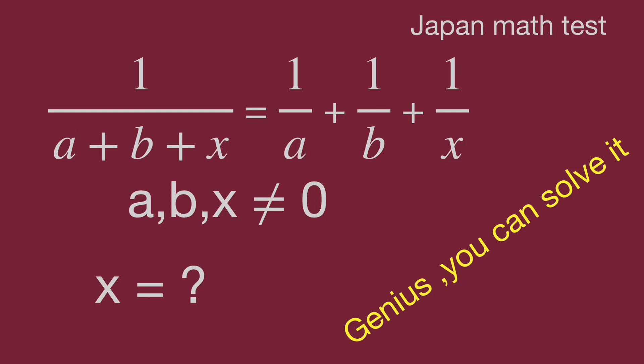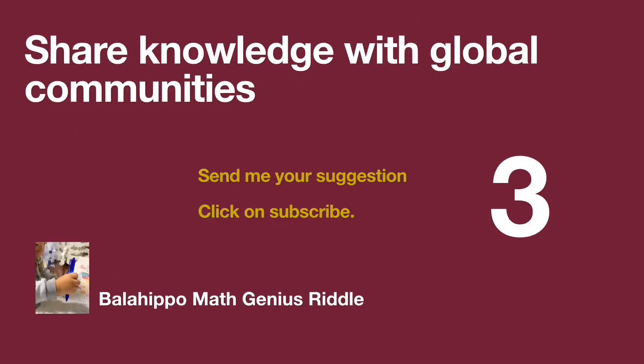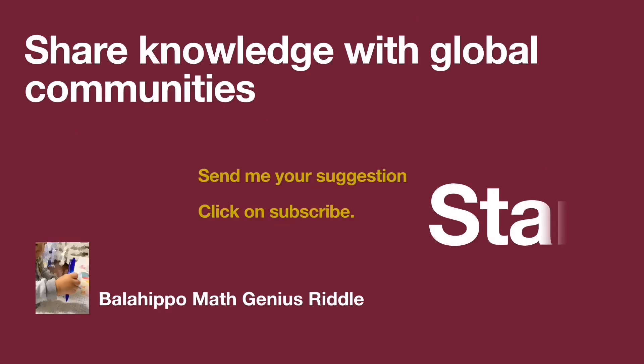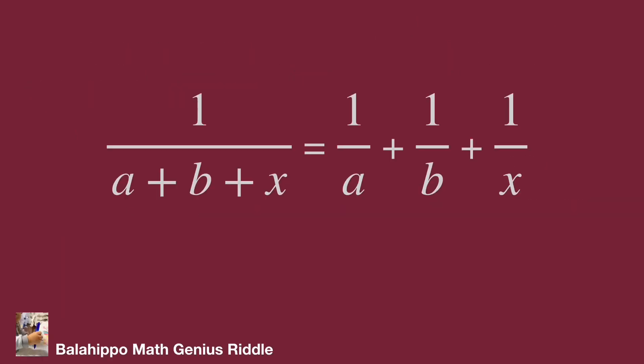Pause the video and try it. When you are ready, keep watching the video to get the result. The given equation is: 1 over (a plus b plus x) equals 1 over a plus 1 over b plus 1 over x.